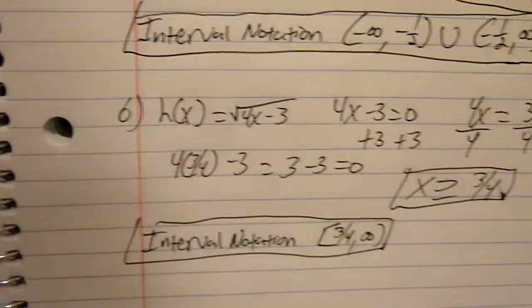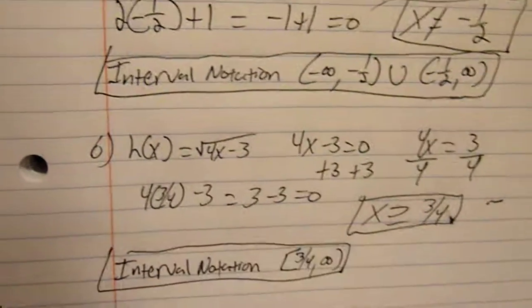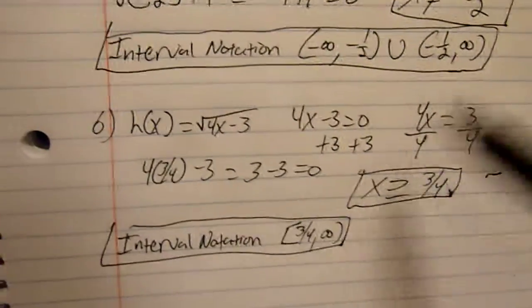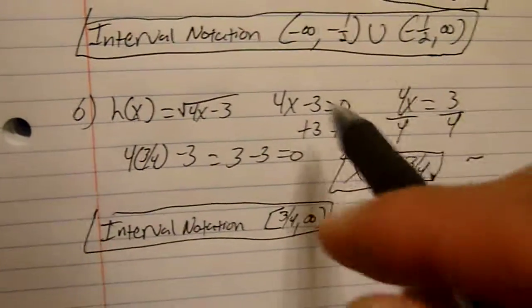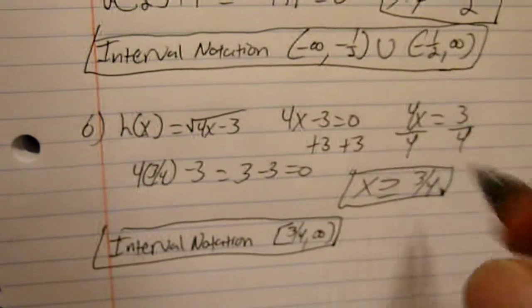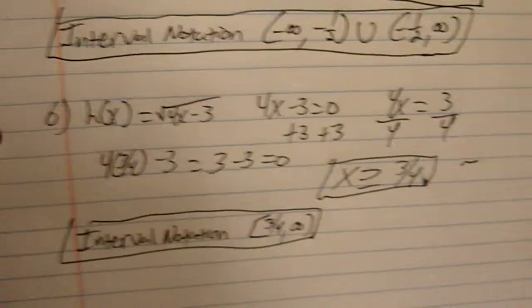Let's go to part b. H of x is equal to the square root of 4x minus 3. Same thing. You're going to solve the equation for x. 4x minus 3 equals 0. You're going to add 3 to both sides to get x by itself.